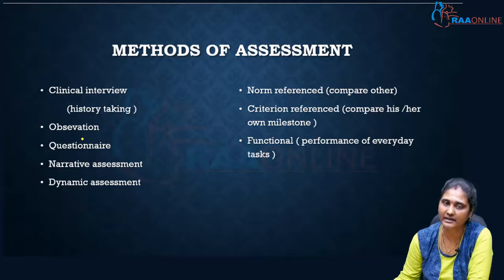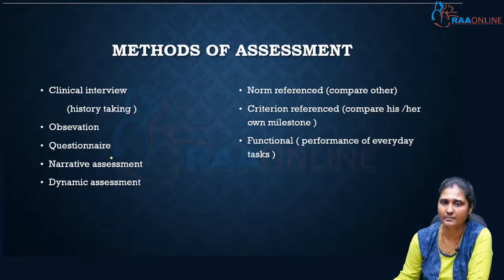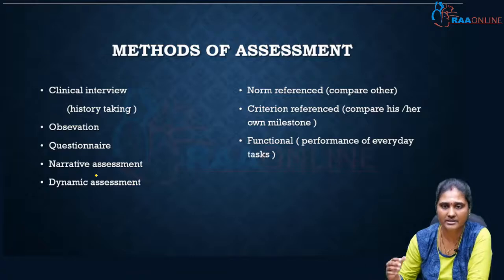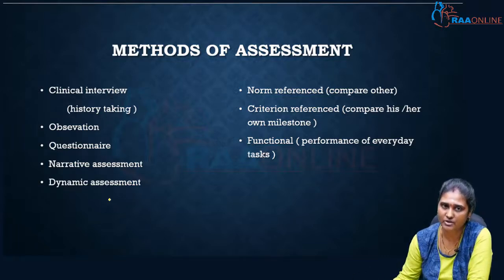Second, we can assess by observing the child — just observing what the child is doing, and by observing we can know what milestones have been achieved. By putting questionnaires for older children, we can give them to both the parents and the child and come to a conclusion. And by narrative and dynamic assessment, we can give some tasks to the child, such as cubes or pencil and paper, as discussed in the previous class on normal development, and we can assess the developmental age.